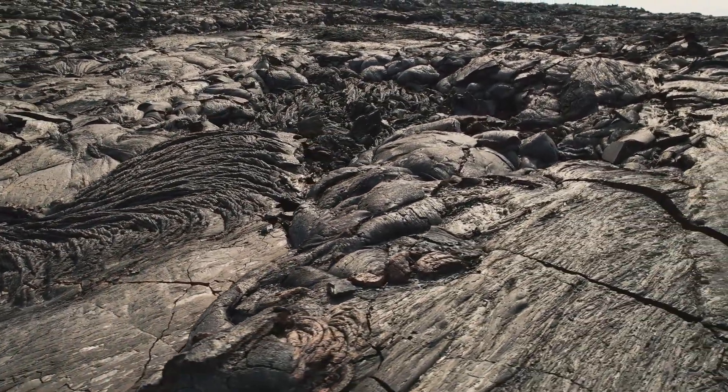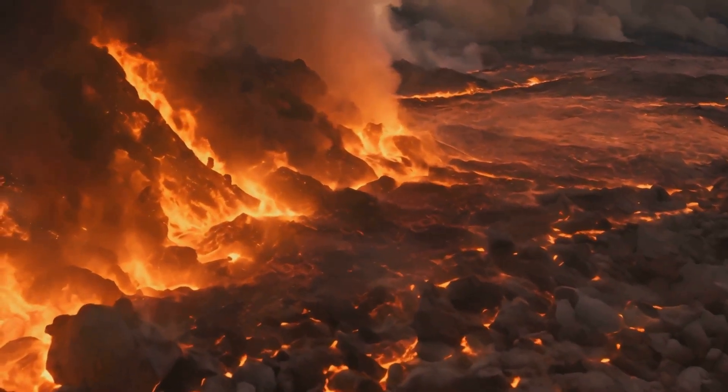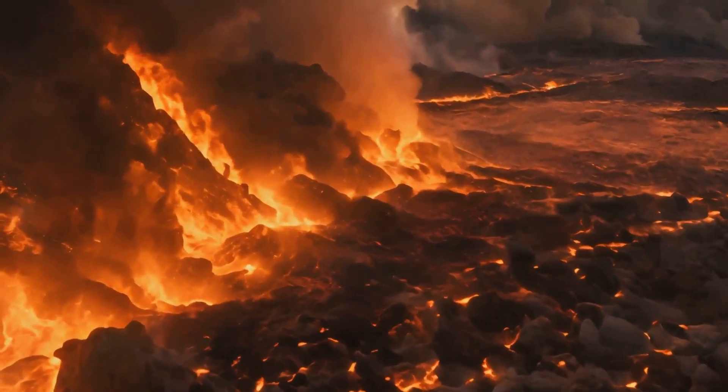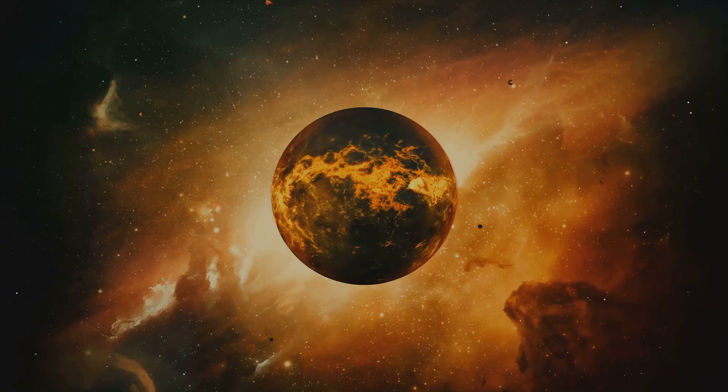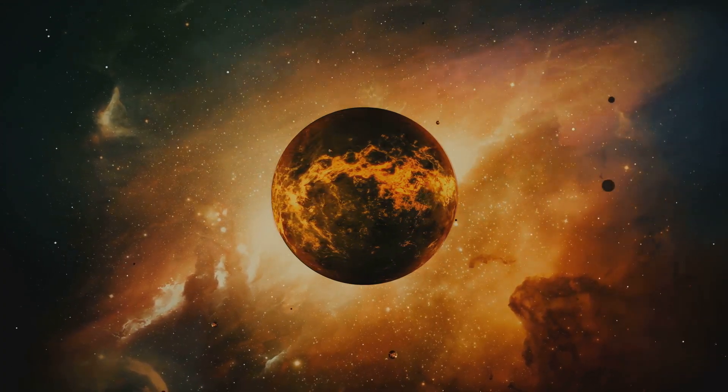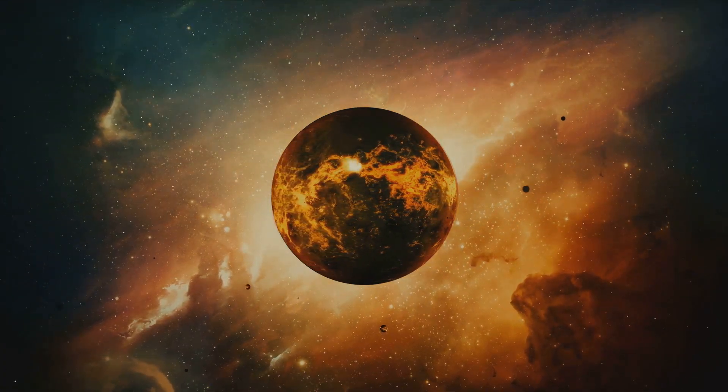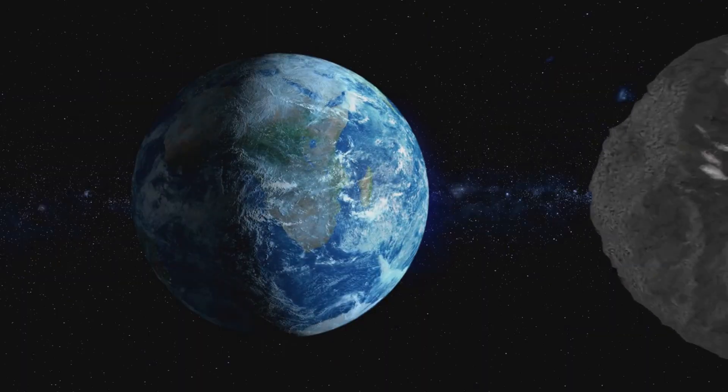The early Earth was a hostile and alien world. Volcanoes erupted across the surface, spewing lava and gases into the atmosphere. The sky glowed with the heat of the molten planet below. The atmosphere was thick with carbon dioxide, nitrogen and other volcanic gases, a toxic mix unsuitable for life as we know it. The bombardment from space hadn't ended with Theia's impact.